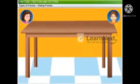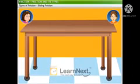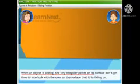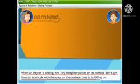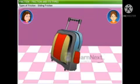You need less of force to keep sliding the table than to move it from rest. And you would need even less of force to keep it moving if the table had wheels. When an object is sliding, the tiny irregular points on its surface don't get time to interlock with the ones on the surface that it is sliding on. That's why you encounter lesser friction while sliding. Right. I think I want one of those new school bags with wheels. It will become so much easier to carry my bag around when I am rolling it.